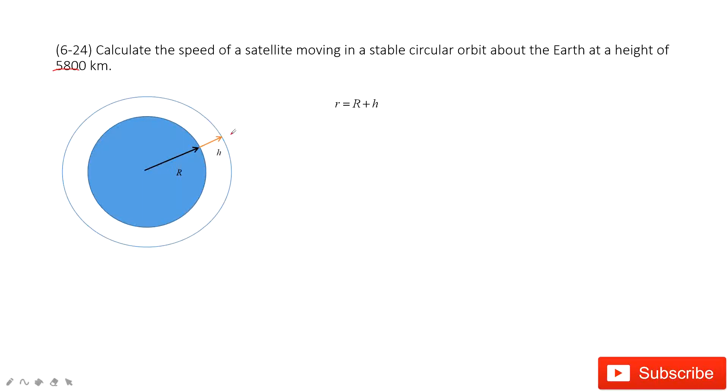The gravitational force equals mass times acceleration. This central force is the gravitational force equals mass times acceleration. This is the central acceleration, v squared divided by r.